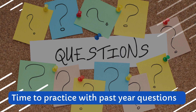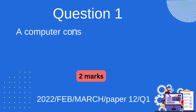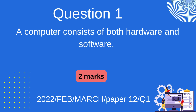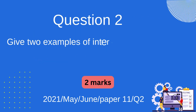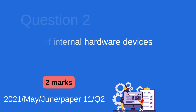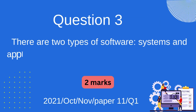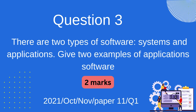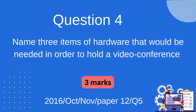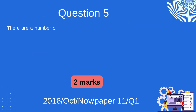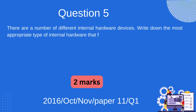Hope you have understood hardware and software, let's look at past questions. We also provide online tuition in case you need one. Question one: a computer consists of both hardware and software — define the term hardware. Question two: give two examples of internal hardware devices. Question three: there are two types of software, system and applications — give two examples of application software. Question four: name three items of hardware that would be needed in order to hold a video conference. Question five: there are a number of different internal hardware devices — write down the most appropriate type of internal hardware that fits the following descriptions.